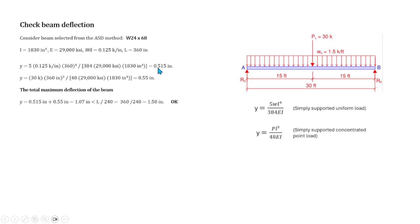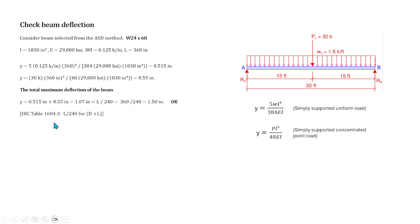The total deflection is 0.515 + 0.55 = 1.07 inches. The allowable limit is L/240 = 360/240 = 1.5 inches. Since 1.07 < 1.5, the actual deflection is within the allowable limit. This provision is from IBC Table 1604.3 for dead load plus live load.